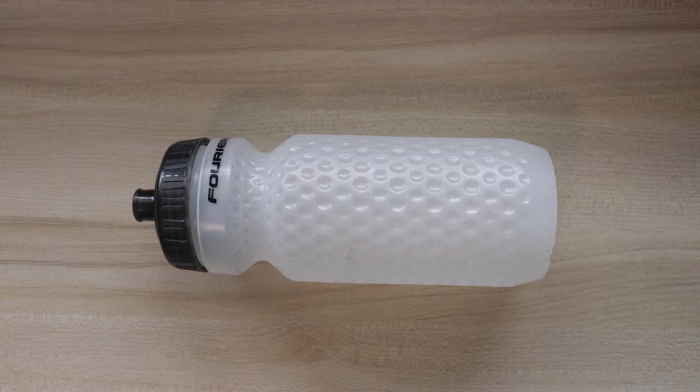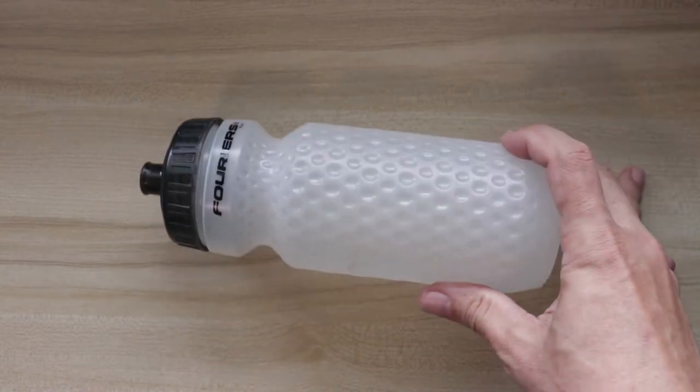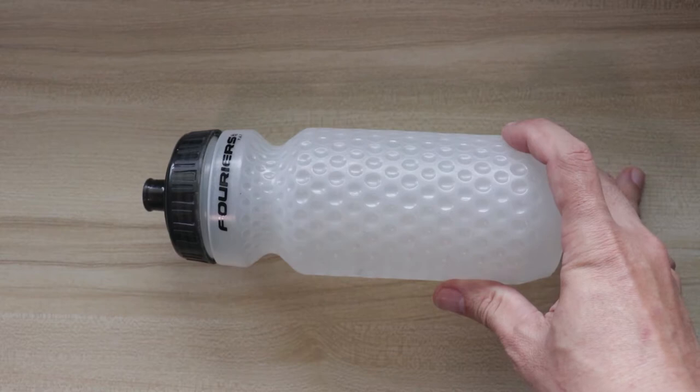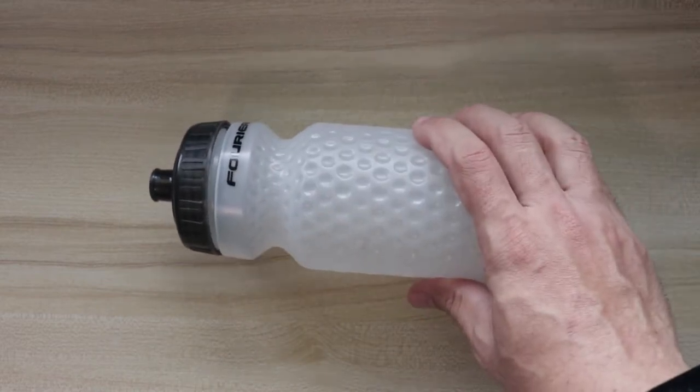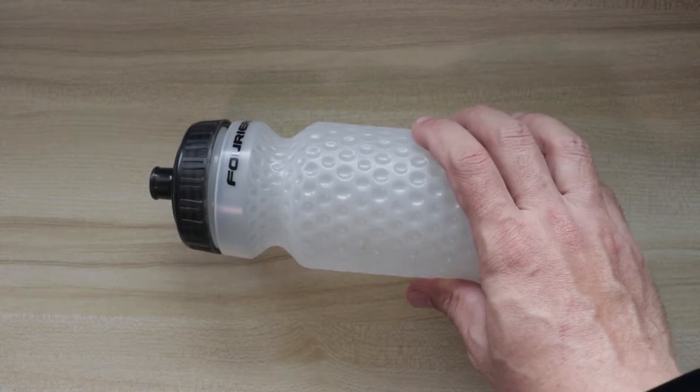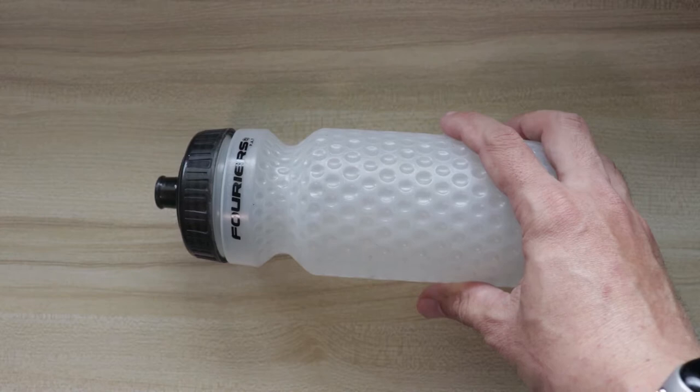That's mainly because most water bottles are made out of plastic and weigh pretty much the same. But with the new Fouriers aerodynamic water bottle, it's actually possible to save a lot of weight in just the water bottles alone. The model you see here is actually about 30 to 40 grams lighter than most conventional water bottles around.